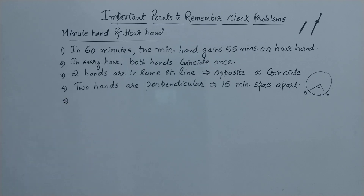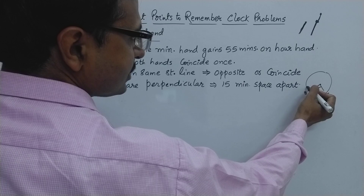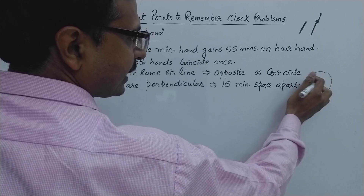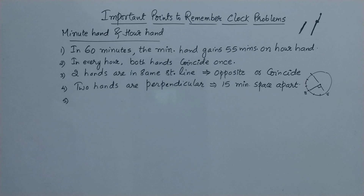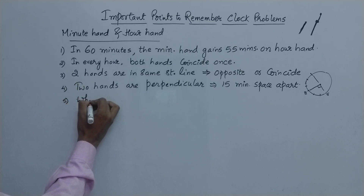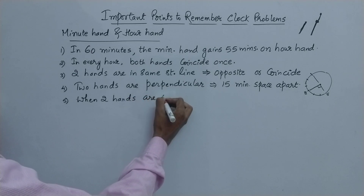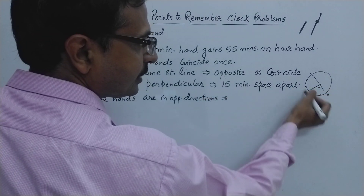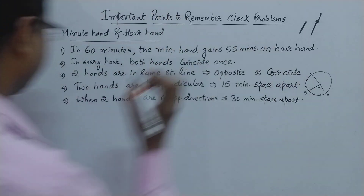From this we can conclude one more thing: when the hands are 20 minutes apart the angle becomes 120 degrees, and when they are 30 minutes apart — 5, 10, 15, 20, 25, 30 — they become exactly opposite. So that is the fifth point: when two hands are in opposite directions, they are 30 minute spaces apart.